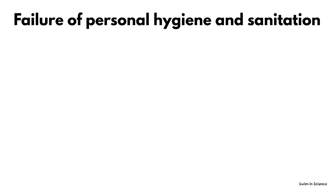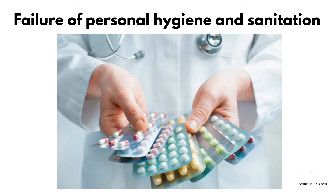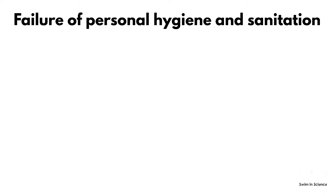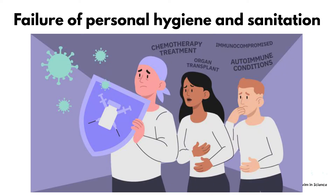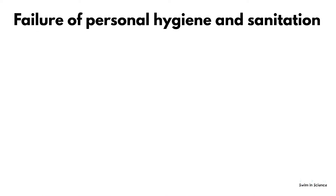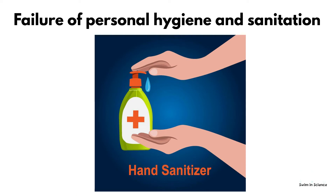Failure of personal hygiene and sanitation — hospitals are the best environment for microbial strains to develop resistance because physicians use a wide variety of antimicrobials to treat different diseases. Patients in the ICU are more prone to infection due to a weak immune system, so a strictly sterile environment is followed in operation theatres and ICUs. Doctors follow safety measures such as changing gloves from patient to patient and using hand sanitizers to avoid the spread of infection.